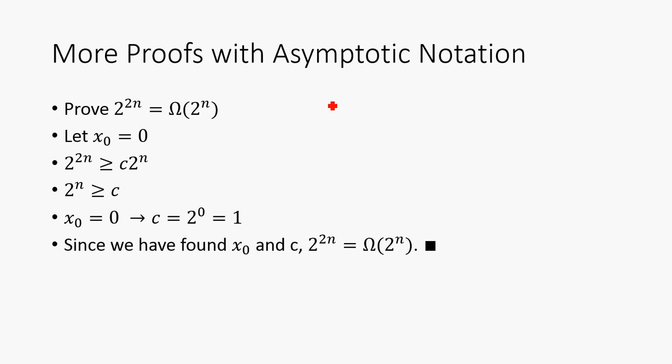So, then, here's another proof with asymptotic notation. This time, we're going to be using Big-Omega. So, we're going to start off by letting x₀ be 0. We need to prove that 2^(2n) is Big-Omega 2^n. So, first we have our inequality here. Then, we divide both sides by 2^n leaving that 2^n has to be greater than or equal to c. Since x₀ is 0, we have that c is going to be 2^0 which is 1. So, since we have found x₀ and c such that the original inequality holds, we see that 2^(2n) is Big-Omega of 2^n and thus completes the proof.